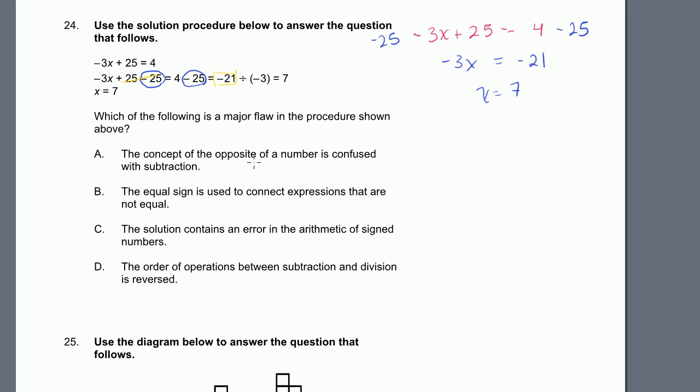So let's see what the choices are. The concept of the opposite number is confused with subtraction. No, not really. The equal sign is used to connect expressions that are not equal. That sounds about right. Because this expression and this are equal. We got -3x + 25 - 25, which is just -3x. That does indeed equal 4 - 25 or -21. But that does not equal -21 divided by -3. So this looks like my answer.